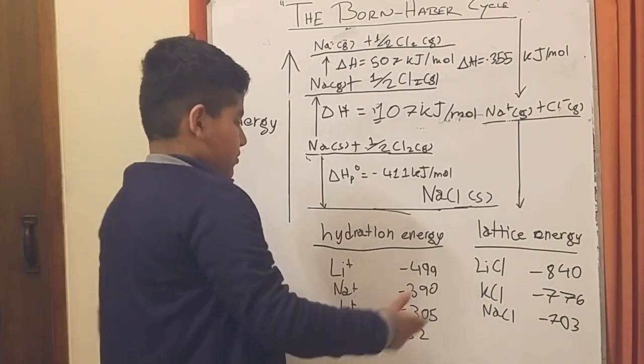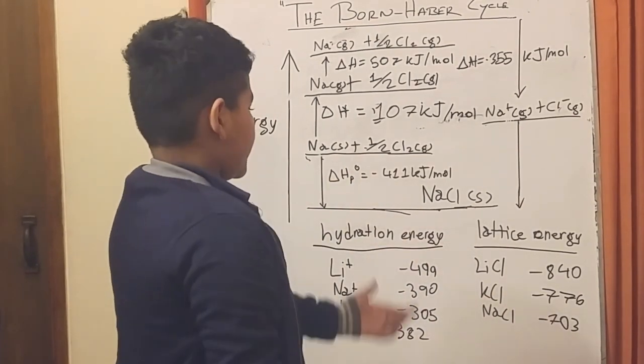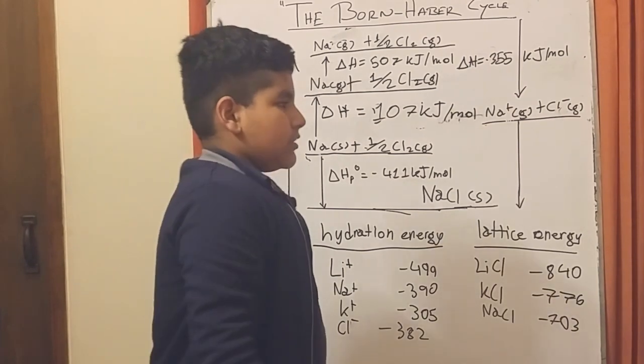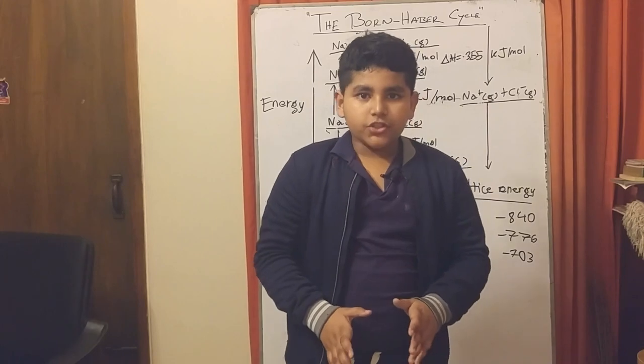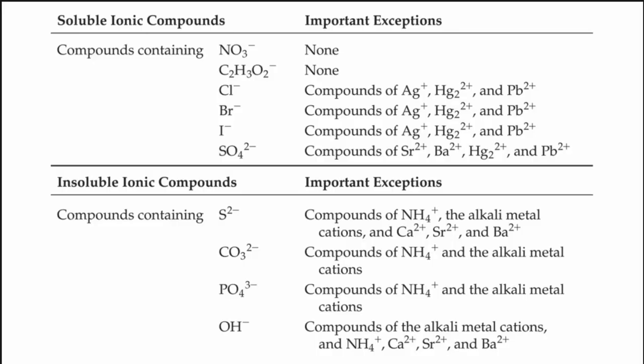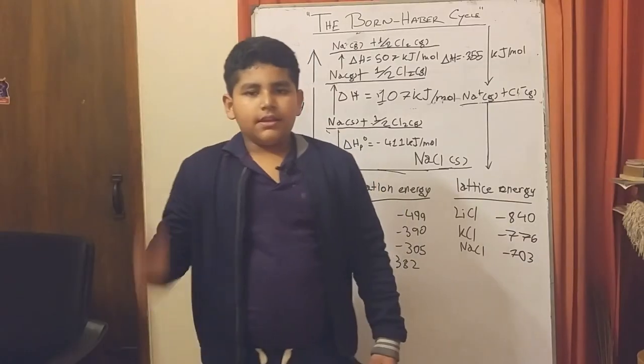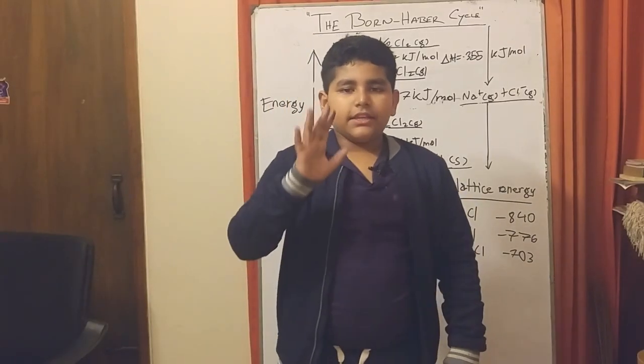And with that, that's pretty much how the Born-Haber cycle works. So this is just the basic kilojoules per mole data, and that's all there is to it. Thank you for watching, and you can check out this diagram to see if there are solubles and insolubles.